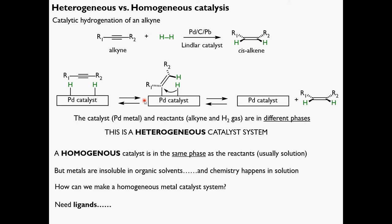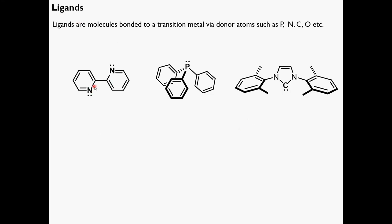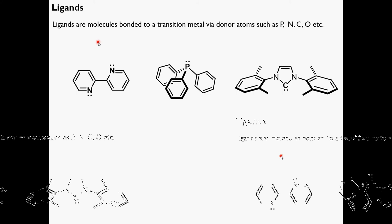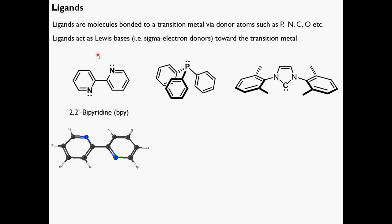Ligands are molecules with a Lewis basic donor atom. For example, 2,2-bipyridine — two pyridine rings bonded together by a carbon-carbon bond, abbreviated BPY — will actually be used in the copper TEMPO lab at the end of the semester. This will stick to copper. These ligands act as Lewis bases towards a transition metal, using their lone pairs — in this case one on each nitrogen — to bond directly to a transition metal.